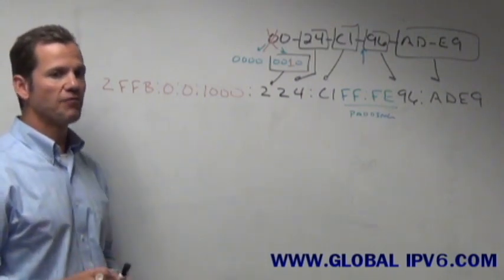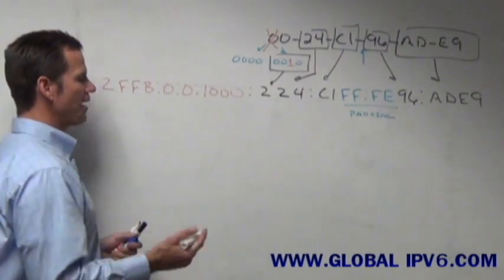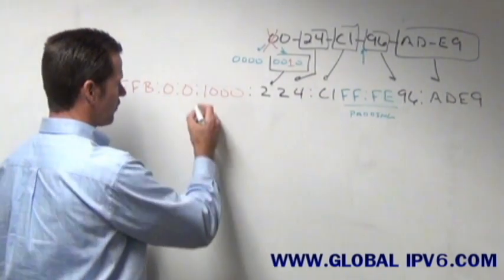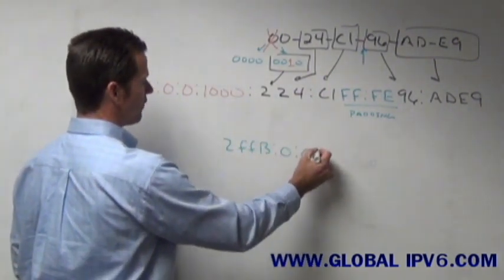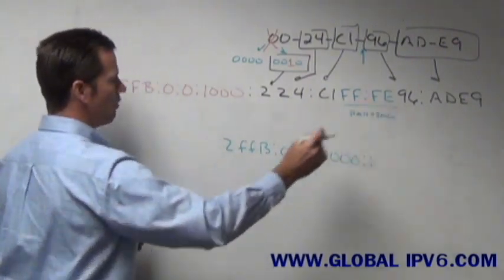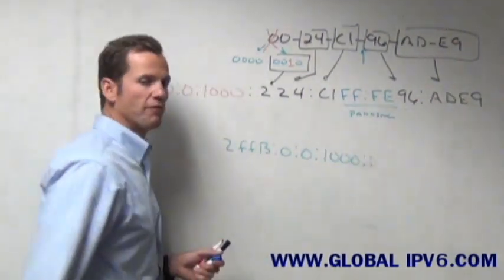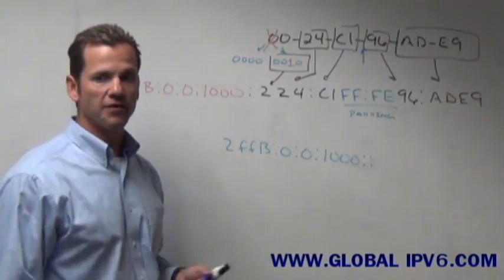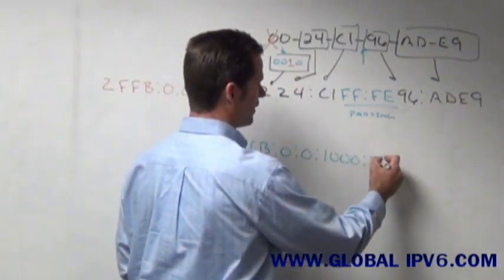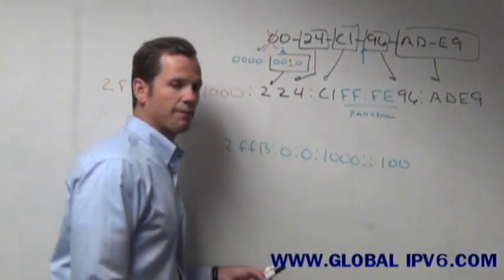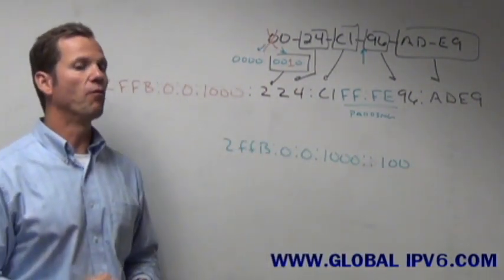So a lot of companies, it's my recommendation, is you may want to go something once again like this: 2FFB:0:0:1000 and then use double colons, fill all this in with zeros, and then what you could do is you just pick a number. Like I could start my first host at number 100, for example, and then the second host would be 101 and so forth.